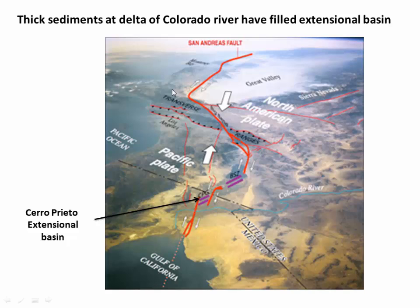Geologically, Cerro Prieto is fascinating. It sits near the southern end of the San Andreas Fault. Here's the US-Mexico border — this is California. It's a little step-over in the San Andreas Fault where there's a little extensional basin, bound on either side by normal faults or extensional faults. Into that basin, the Colorado River has come and over millions of years dumped very thick packages of sands.